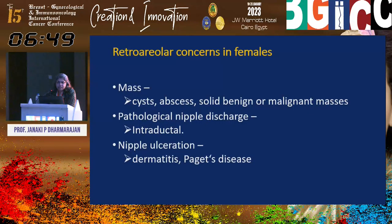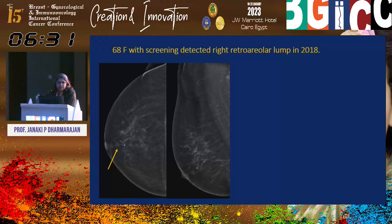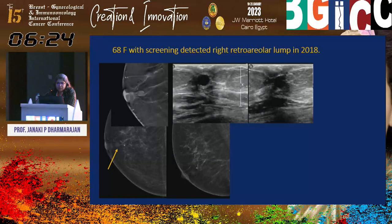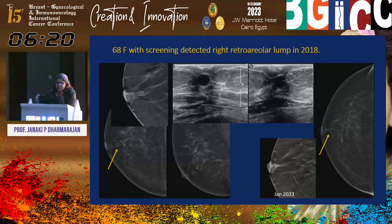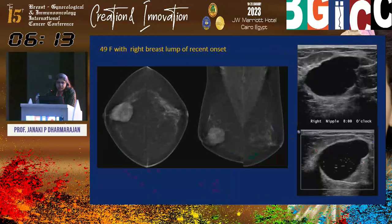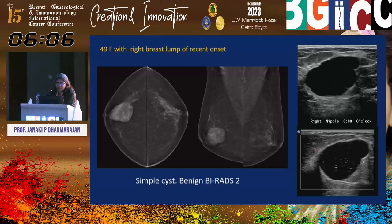Retroareolar concerns in females include cysts, abscess, solid or benign masses. They can present with pathological nipple discharge, nipple ulceration — most commonly dermatitis and rarely Paget's disease. A 68-year-old lady presenting for screening in 2018 had a simple cyst in the right retroareolar region, called as benign, which completely regressed on recent follow-up — it is very essential to follow up these lesions. A 49-year-old lady had a simple right breast cyst categorized as BIRADS 2, not needing imaging follow-up unless clinical inflammation occurs and aspiration is required.